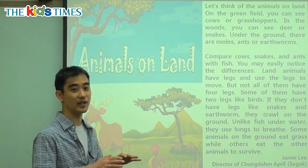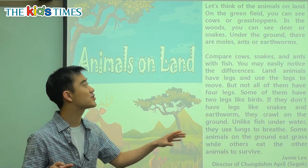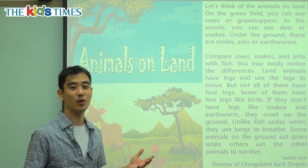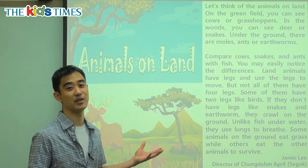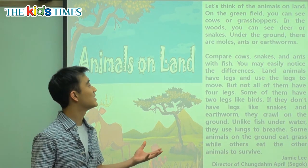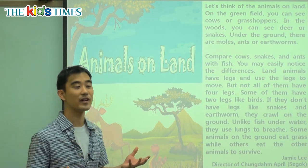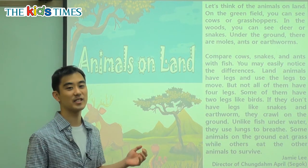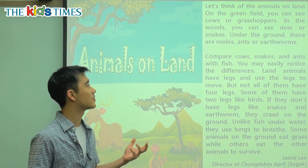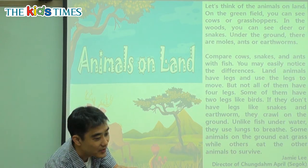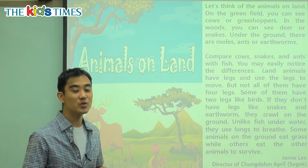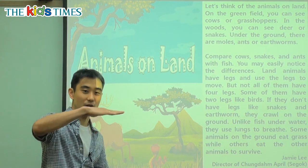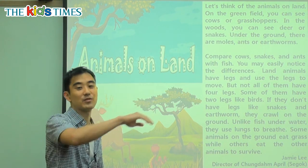On the green field, where there's lots of grass and trees, you can see cows or grasshoppers. In the woods or in the forest, you can see deer or snakes. Under the ground, there are moles, ants, and earthworms that move around like this.